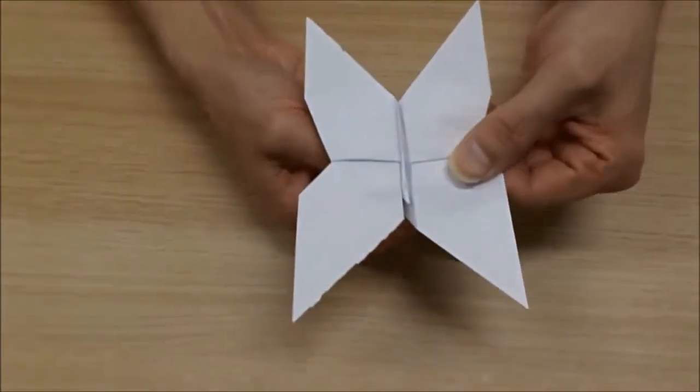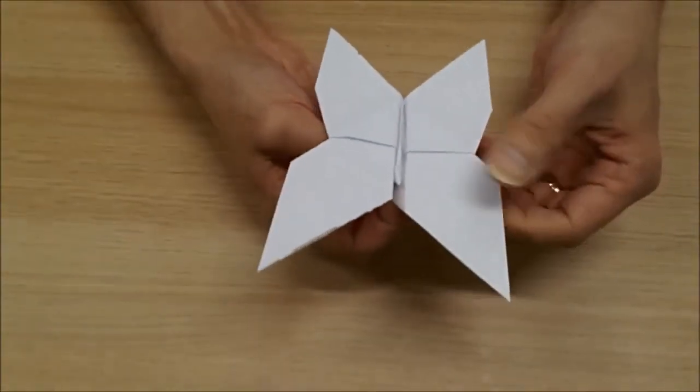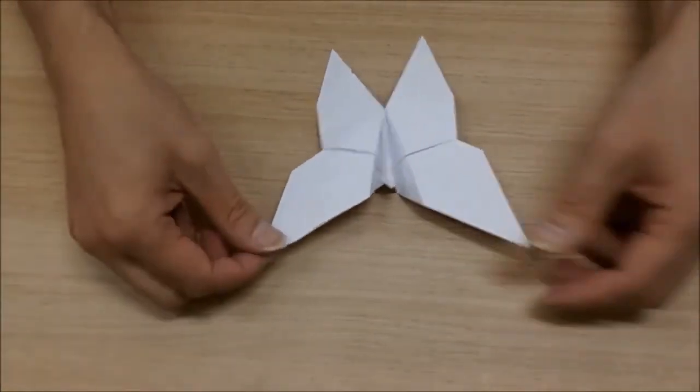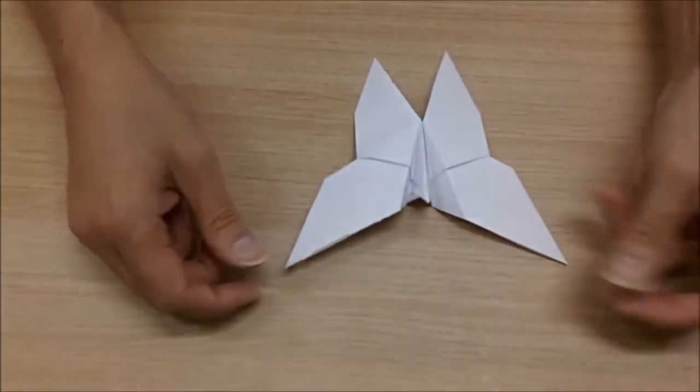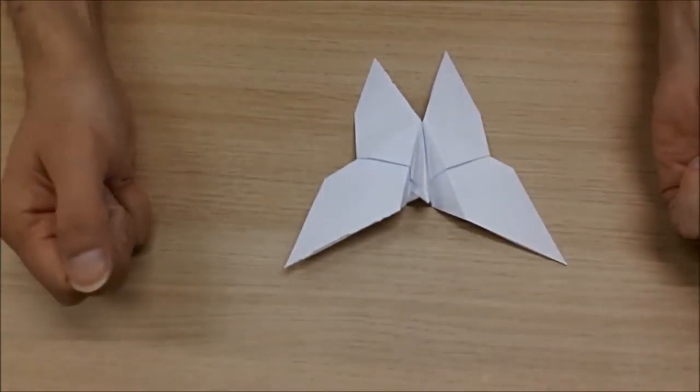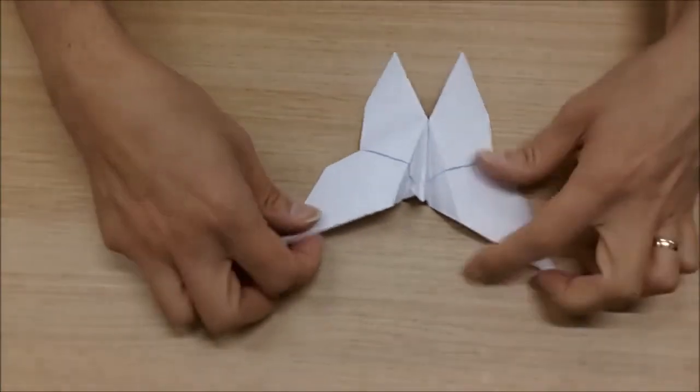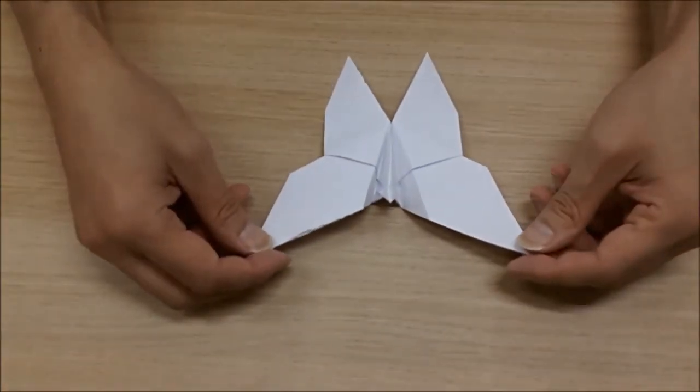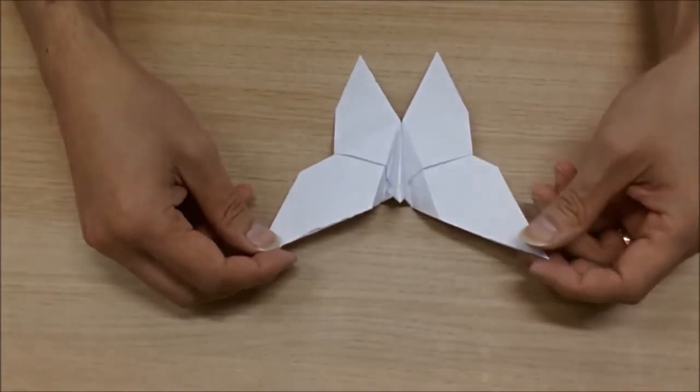Then, we should have a butterfly like this. But when I actually release this, it expands a bit. There is our model of our butterfly. Thank you for watching. I hope you were successful in doing my tutorial. And please do keep an eye out for my other tutorials on making other animals and objects.